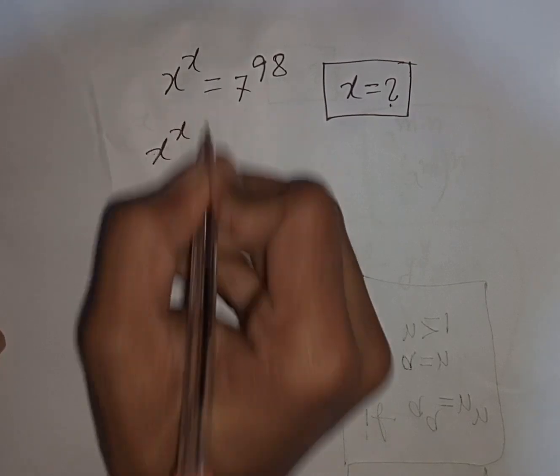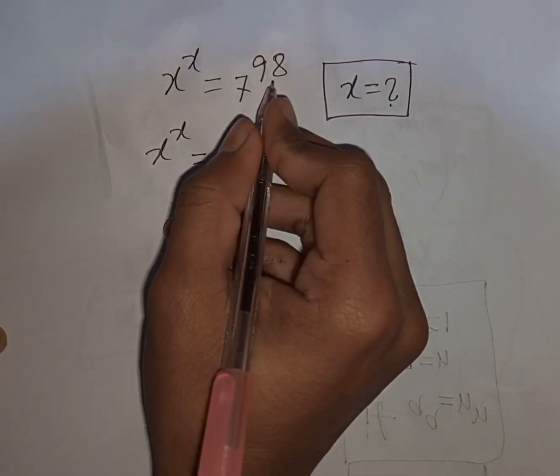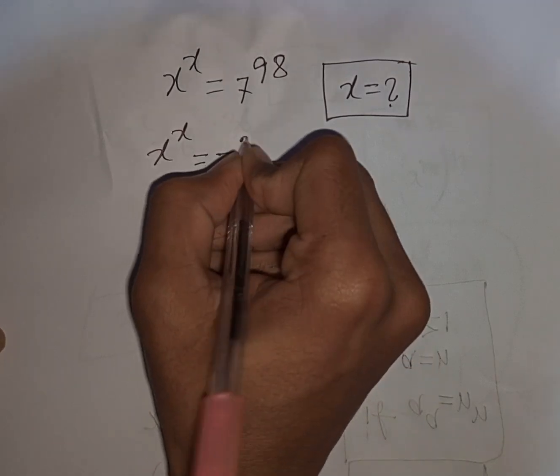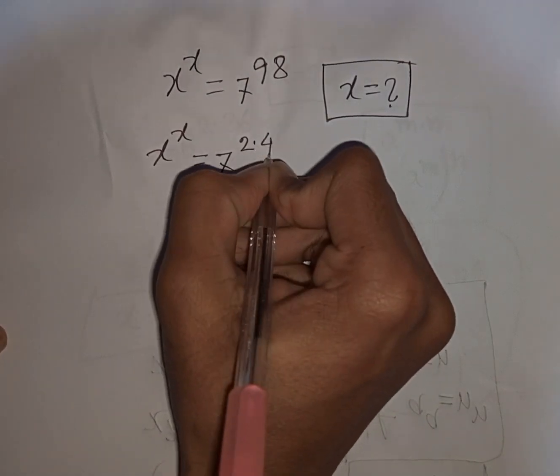We have x to the power x equals 7 to the power of 98, which can be written as 7 to the power of 2 times 49.